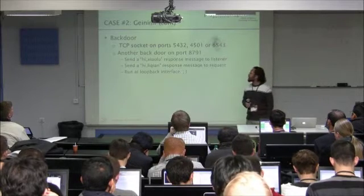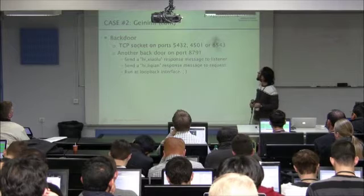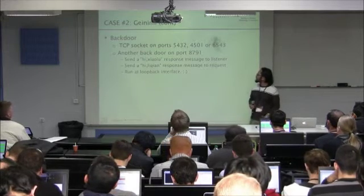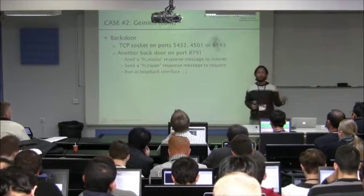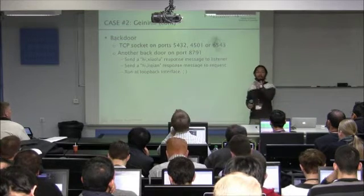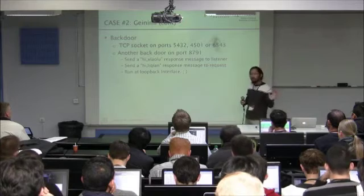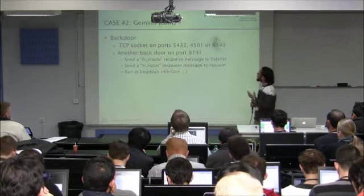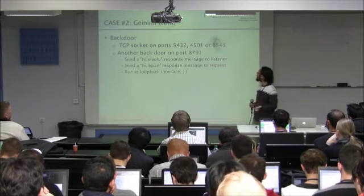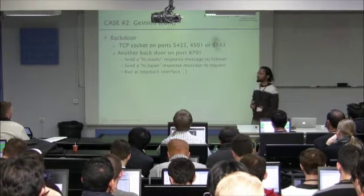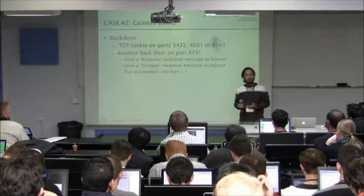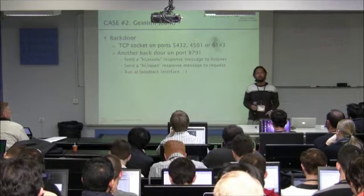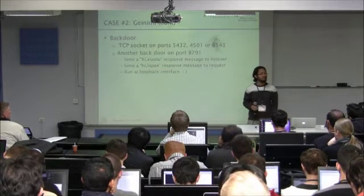Quite interestingly, it also has a listener on port 6543 and another listener on port 5791. It sends something in Chinese characters. I don't want to speculate, but just because it has Chinese characters doesn't mean it's from China. To establish a connection it sends a 'hi' message and responds to message requests. What's surprising is it's been designed to listen on the loopback interface — having a listener but running on the loopback interface is kind of weird.